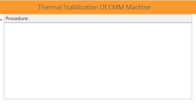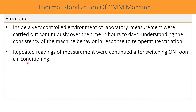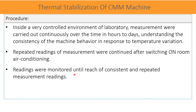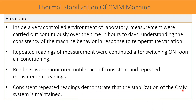Experimental procedure: inside a laboratory of very controlled environment, measurements were carried out continuously over time spanning hours to days, to understand the consistency of machine behavior in response to temperature variation. Repeated readings of measurements were continued after switching on the room air conditioning. Readings were monitored until consistent and repeated measurements were achieved. Consistent repeated readings demonstrated that stabilization of the CMM system had been reached.